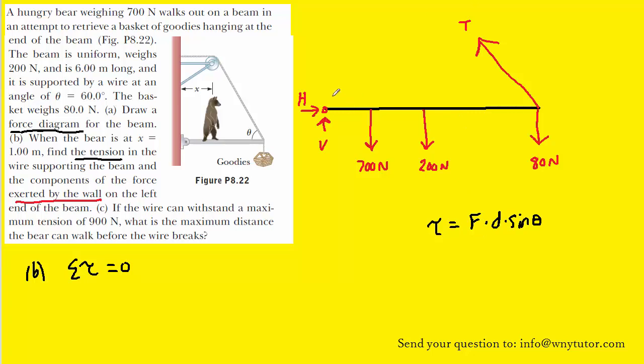And a pivot point is best selected on the object, so in this case it's the beam, and you want to position the pivot at the point through which the greatest number of unknown forces passes. I'll say that again, you want to place the pivot on the beam at a point through which the greatest number of unknown forces is passing.